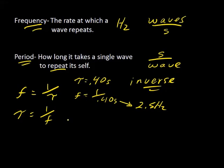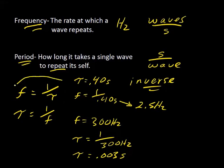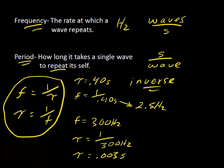Let's work another problem. Suppose we have a wave with a frequency of 300 Hertz and we want to know the period. We find the inverse of the frequency: the period equals 1 over 300 Hertz, which is 0.003 seconds. The inverse of Hertz gives us seconds. That's the relationship between frequency and period — each is the inverse of the other.